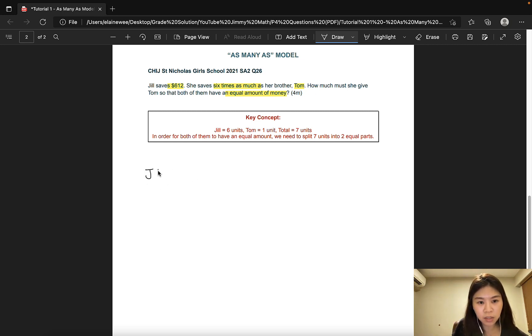So we have 6 units for Jill and 1 unit for Tom. Jill has $612. We know that the total is 7 units and what we are trying to do is to split these 7 units into two equal parts. So let's go ahead and find out how much they have all together. Since 6 units is $612, 1 unit would be 612 divided by 6 and that would give us 102. So this is the amount that Tom has. And we can include this in the model.